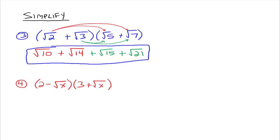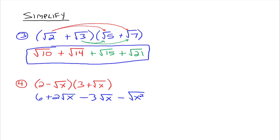Let's try one more: 2 minus the square root of x times 3 plus the square root of x. Using the distributive property twice: 2 times 3 gives us 6, 2 times the square root of x gives plus 2 times the square root of x — you can't multiply the 2 underneath the radical. Then negative the square root of x times 3 gives minus 3 square root of x, and negative the square root of x times the square root of x gives minus the square root of x squared. The square root of x squared simplifies down, and 2 radical x and negative 3 radical x are like terms, so this all simplifies to 6 minus the square root of x minus x.